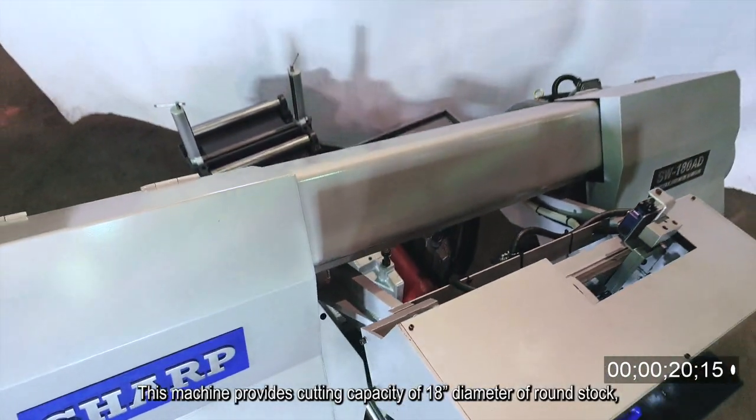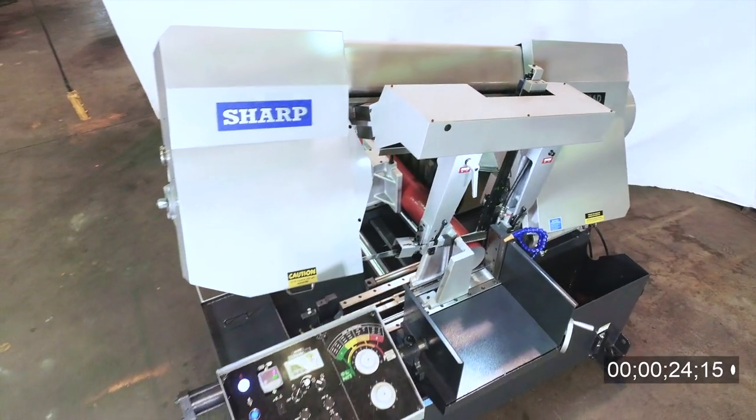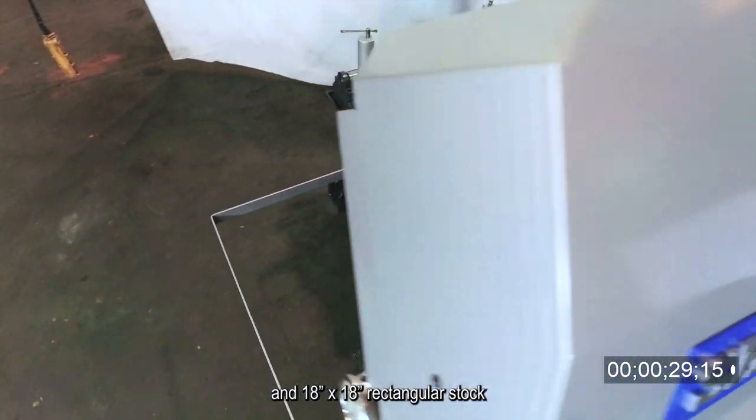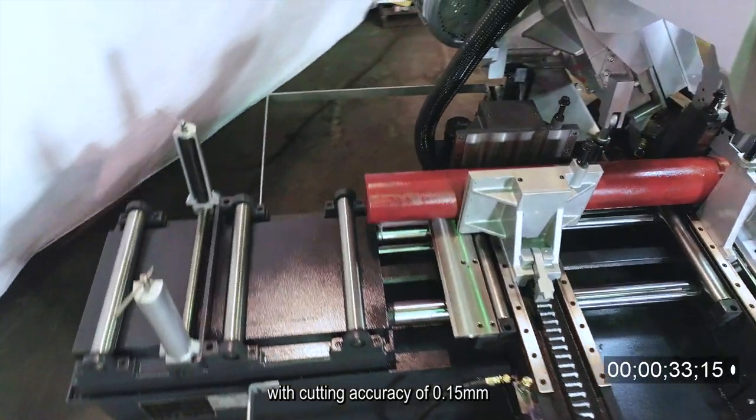This machine provides cutting capacity of 18 inches of diameter of round stock, 18 by 18 inches square stock, and 18 by 18 inches rectangular stock with cutting accuracy of 0.15 millimeters.